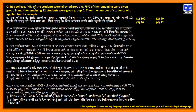In a college, 40% of students were allotted group A, 75% of remaining were given group B, and the remaining 12 students were given group C. Then the number of students who applied for the group is?